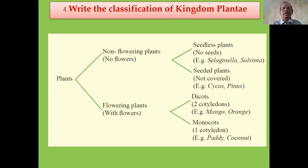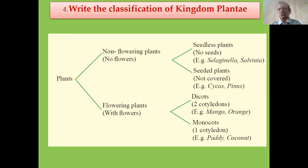The first type of angiosperm is dicotyledonous plants — examples include mango, orange, and legumes. The second type is monocotyledonous plants — examples include sugarcane, paddy, coconut, and similar plants. This is the simple classification of kingdom Plantae.